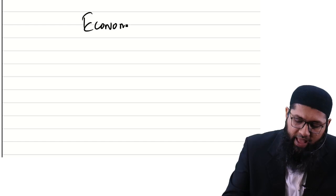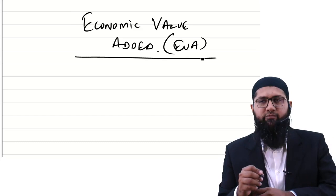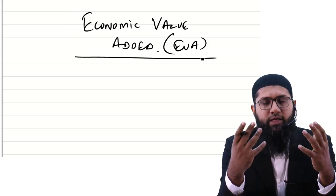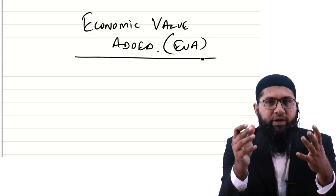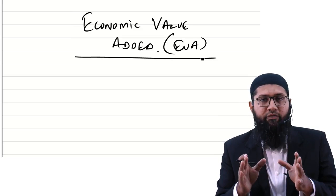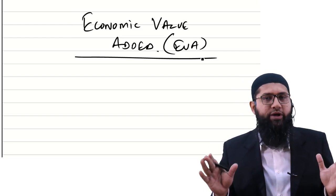The topic we shall be discussing is Economic Value Added, also known as EVA. Economic value added is one of the financial performance indicators that tells you how much value addition has been done for the shareholders. Importantly, EVA is a very significant computational area of APM, and you could expect the examiner to test it as a full question, a major part, or even a part of a question on a frequent basis.